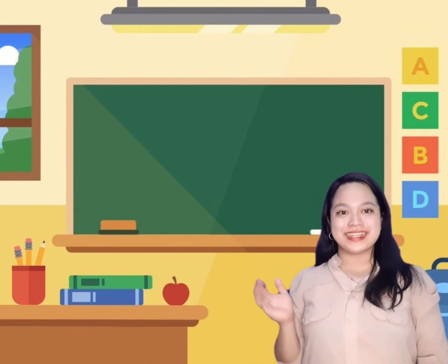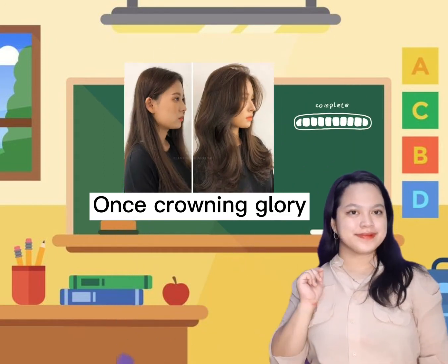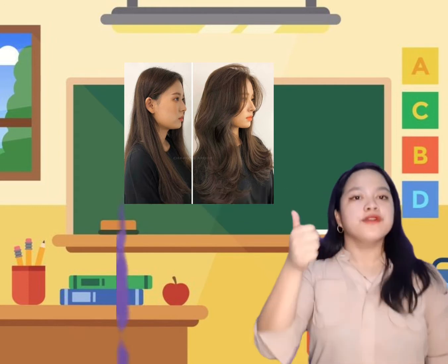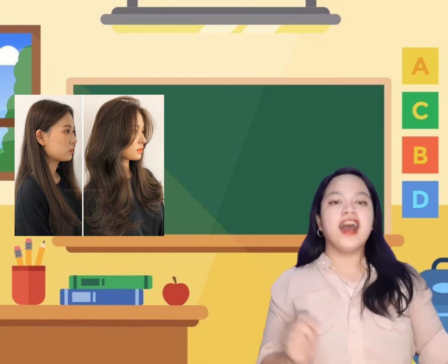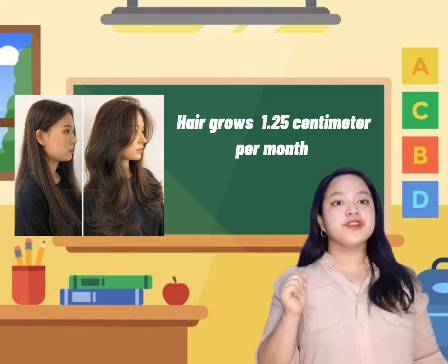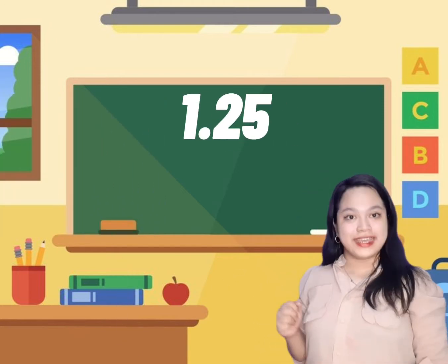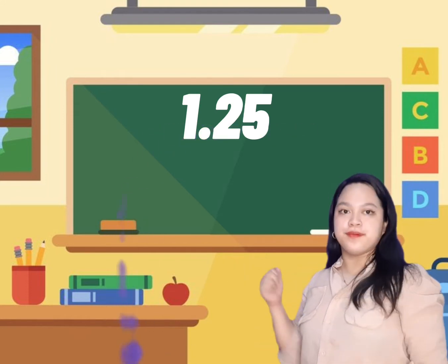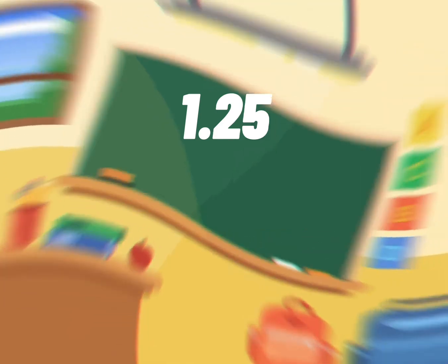Now we have a picture puzzle. All you have to do is guess what picture this is. Very good — it is a hair! Did you know that according to a study, an average hair tends to grow 1.5 centimeters per month? Now let's look at the given decimal 1.25, read as one and twenty-five hundredths.